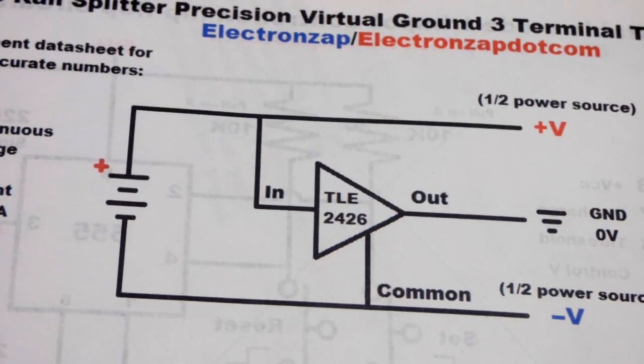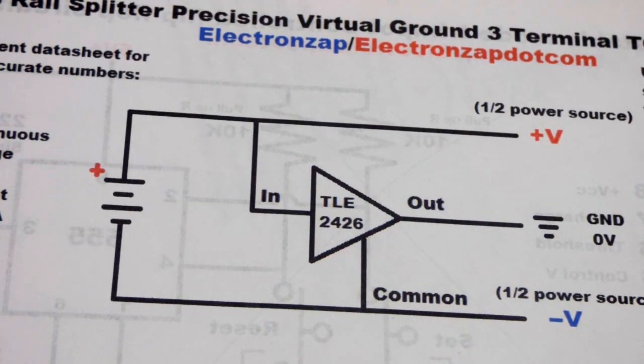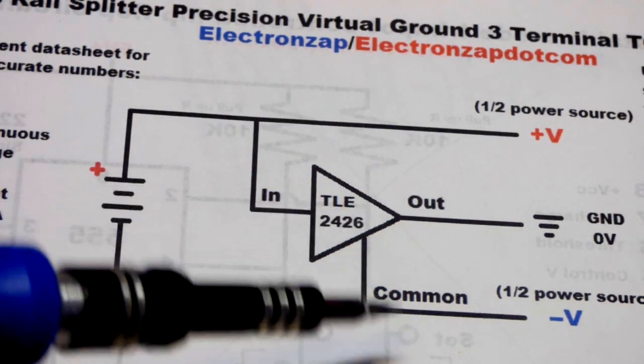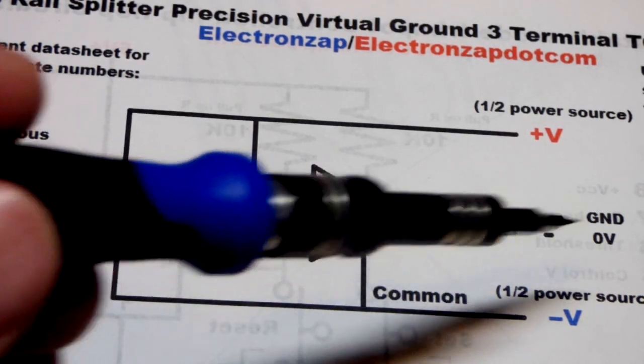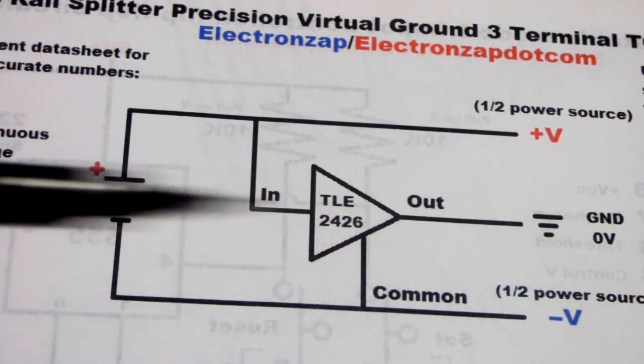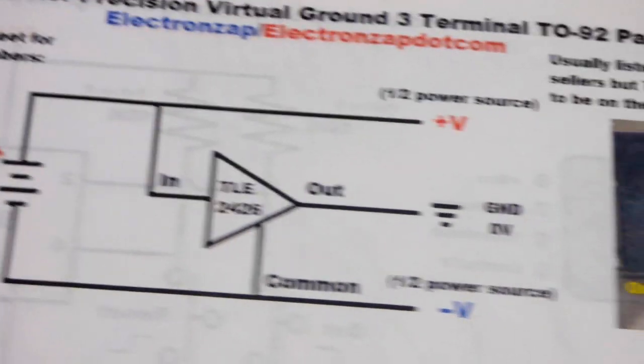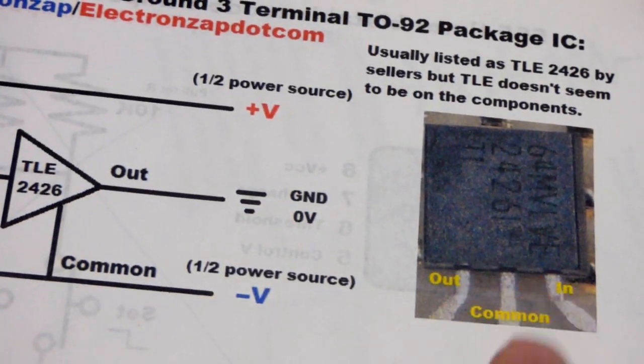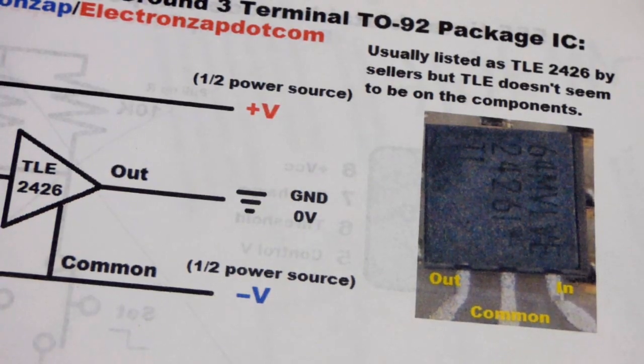You can see it's three terminals. We take the In and the Common, put them across the power supply—In to positive, Common to negative—and then the Out will be a halfway point which becomes our zero volt reference point. There is the pin layout right there. Pin on the left is Out, pin in the middle is Common, pin on the right is In.